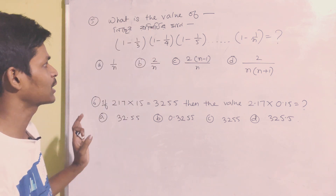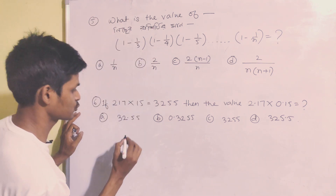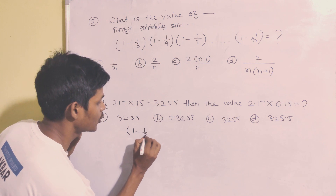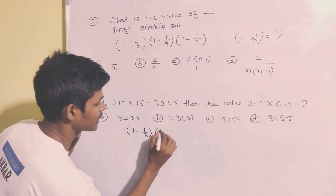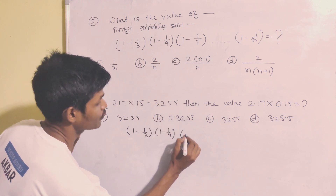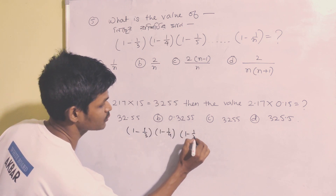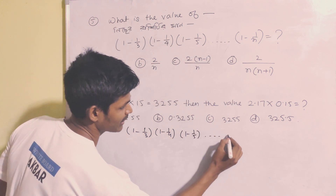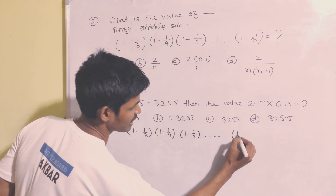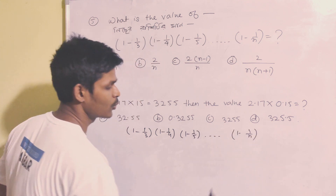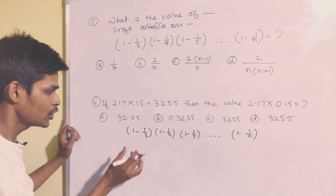Let us simplify each term: 1 minus 1 by 3, then 1 minus 1 by 4, then 1 minus 1 by 5, and so on up to 1 minus 1 by n.